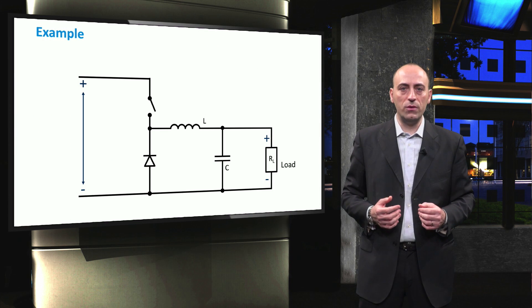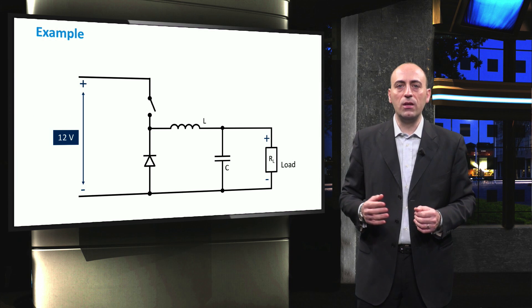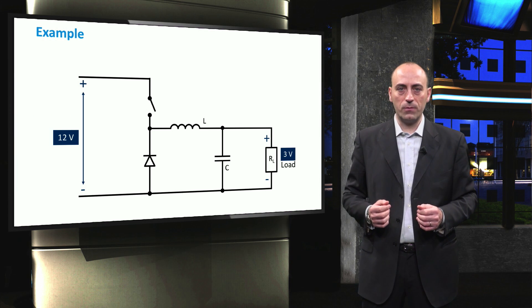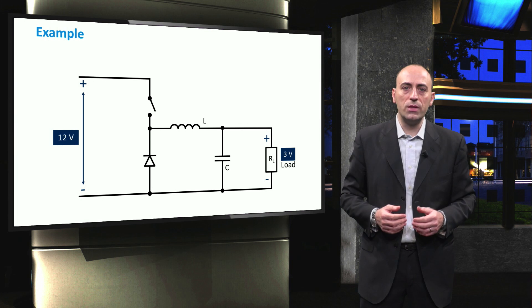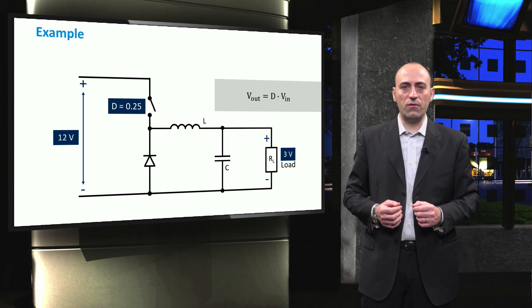Just an example to conclude the video. We have 12V at the PV side, and we have to deliver 3V at the load side. This is the equation to use, and therefore we need a DC-DC conversion with a duty cycle of 0.25.